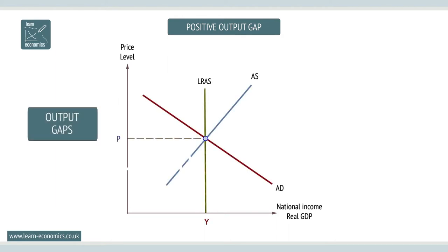With a positive output gap, aggregate demand exceeds an economy's potential at Y. This can be troublesome as it can cause inflation, which is a significant economic problem. Let's look at this.